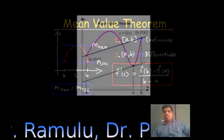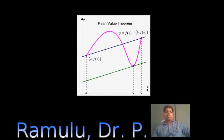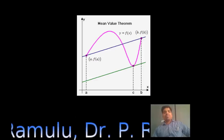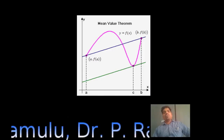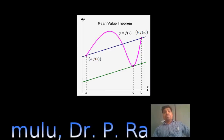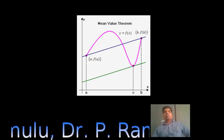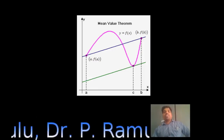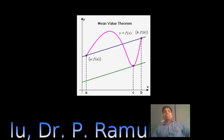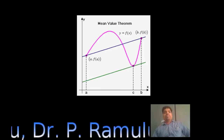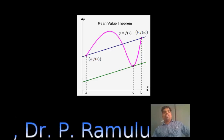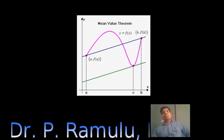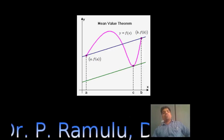Looking at the graph: observe this graph clearly. The pink color curve is the function, which is differentiable as well as continuous. Here f(a) and f(b) are not equal, so f'(C) equals f(b) minus f(a) divided by b minus a. The tangent at point C has the same slope as the line joining the points (a, f(a)) and (b, f(b)). That means there exists a tangent line which is parallel to the secant line of the curve.